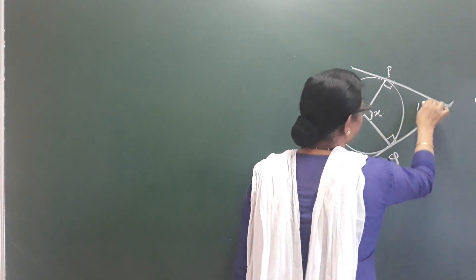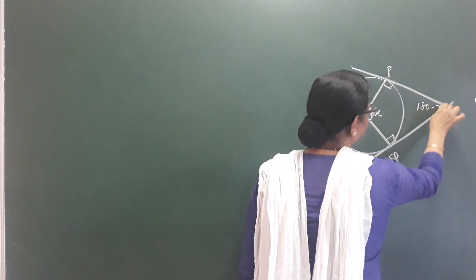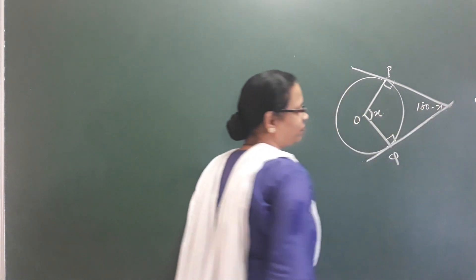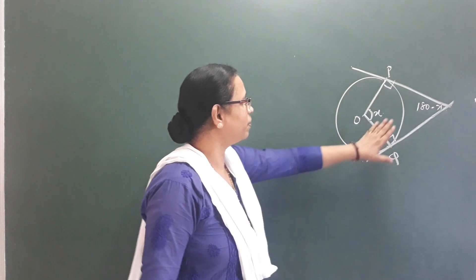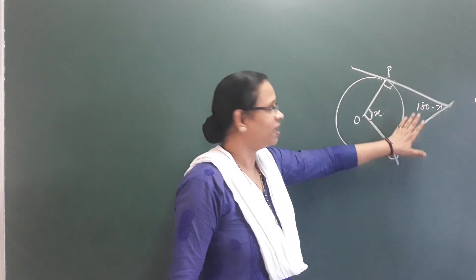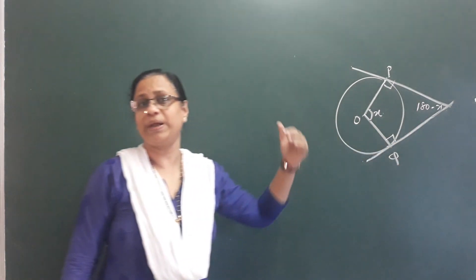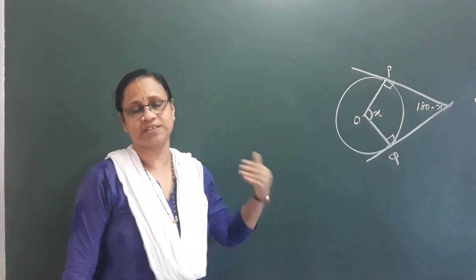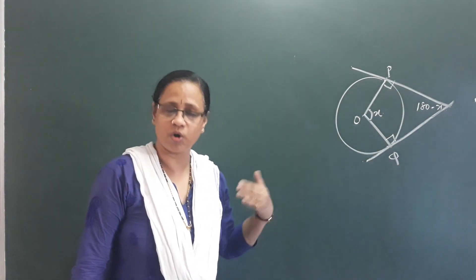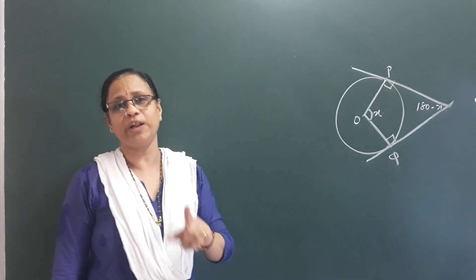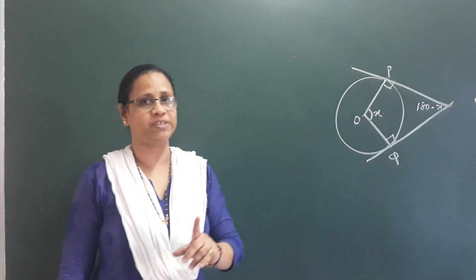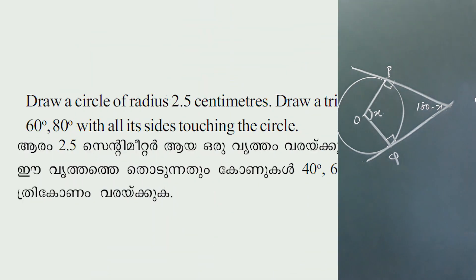This is X. This is 180 minus X. We have taught the theory. The problem is on page 166. We have to do it first.